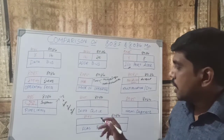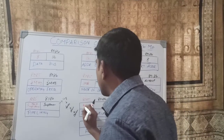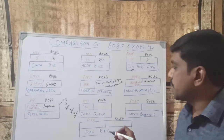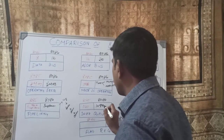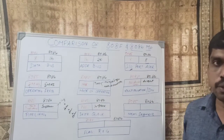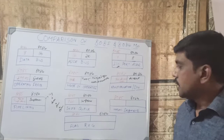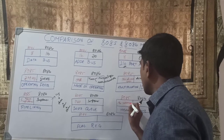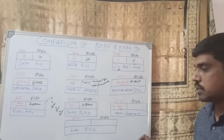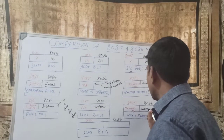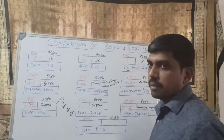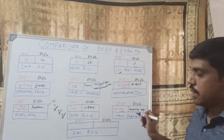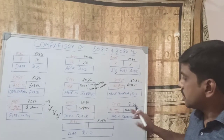The next property is instruction queue. In the 8085 microprocessor, there is no instruction queue. But the 8086 microprocessor supports and has an instruction queue. The next property is memory segment. In the 8085 microprocessor, there is no memory segment. In the 8086 microprocessor, it has memory segments — the whole memory is partitioned into data memory, code memory, extra segment, and stack segment.